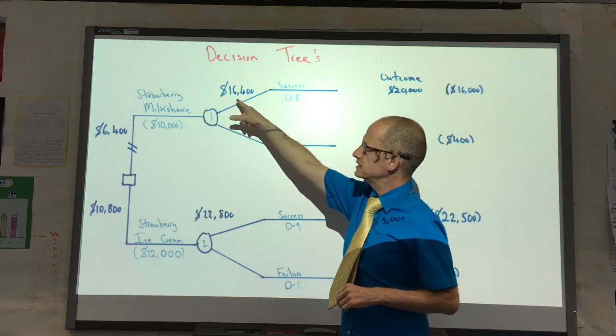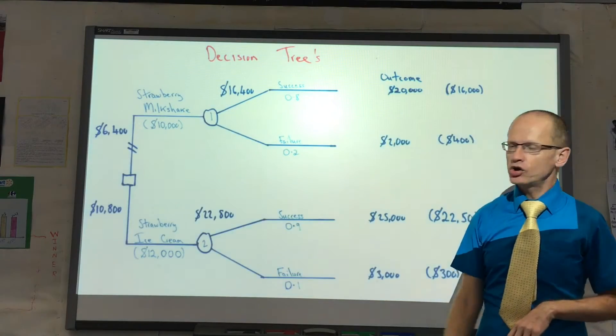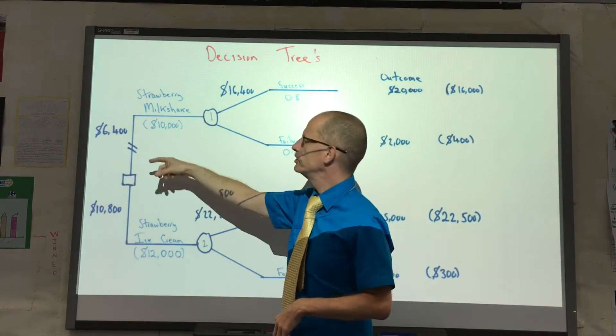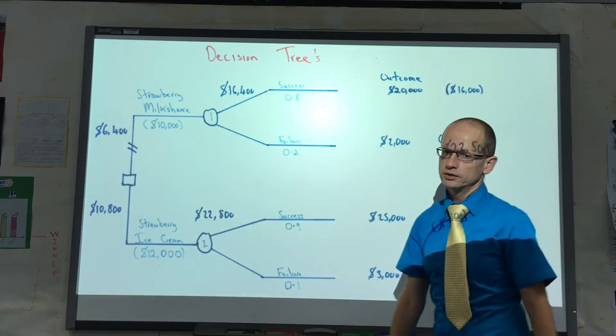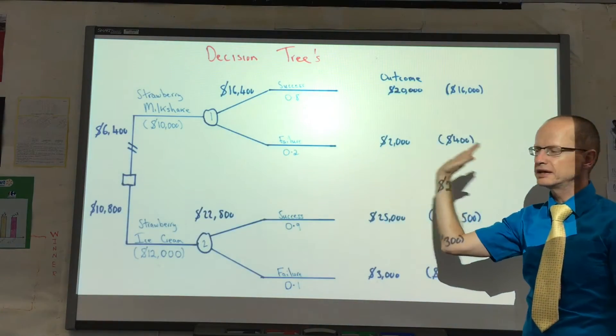We therefore place the $16,400 here. The cost is $10,000. Therefore the expected profit would be $6,400. So you can see how we're reading from left to right and then back again.